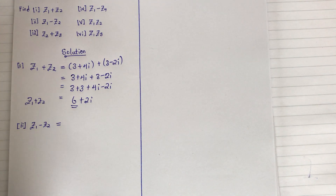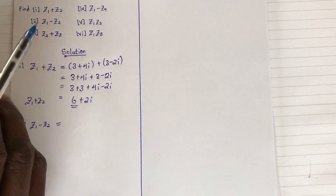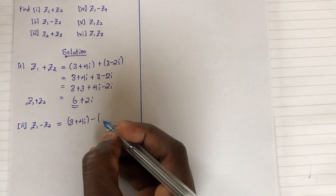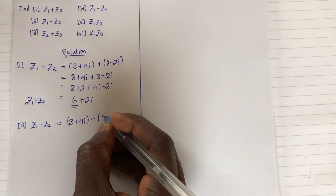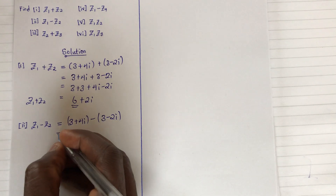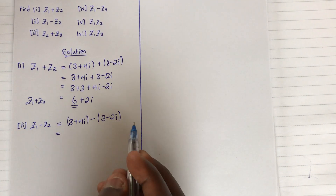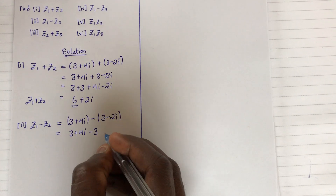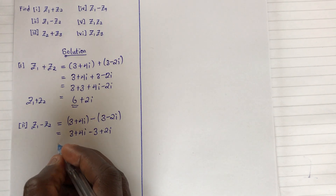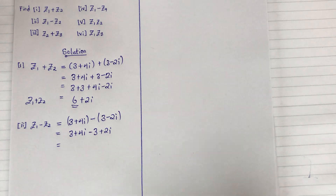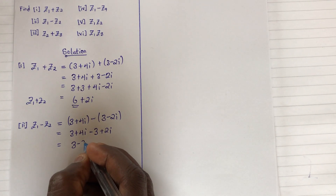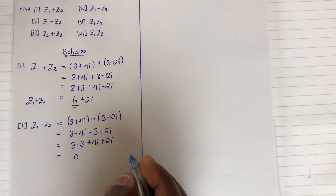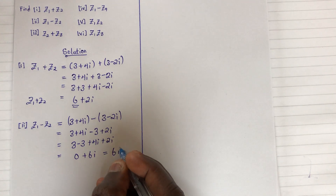The second example asks us to subtract: z1 minus z2. We have z1 as 3 plus 4i, and we subtract z2 which is 3 minus 2i. Removing the brackets by distributing the negative sign gives us 3 plus 4i minus 3 plus 2i. Adding all real terms and all imaginary terms: 3 minus 3 is 0, and 4i plus 2i is 6i.